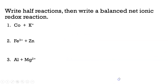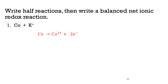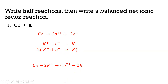Now try some practice problems yourself — pause the video and give these a shot. When writing half reactions, make sure the charge is the same on both sides; when adding them together, make sure the same number of electrons are lost as gained. For the first reaction: cobalt loses two electrons and potassium only gains one, so multiply the potassium half reaction by two to get the overall redox reaction.